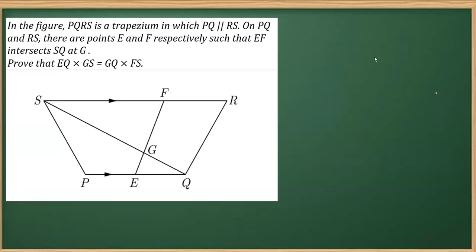In this question from the chapter on similar triangles, we are given PQRS as a trapezium where PQ is parallel to RS. Further, we are given two points E and F on the lines PQ and RS respectively.